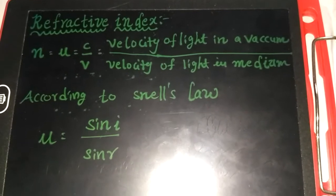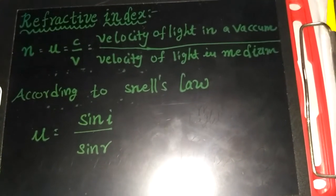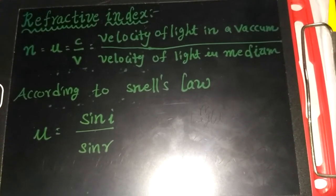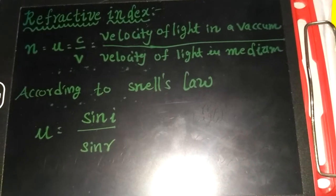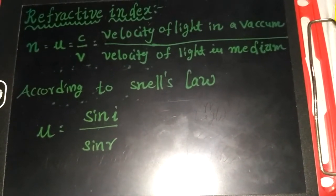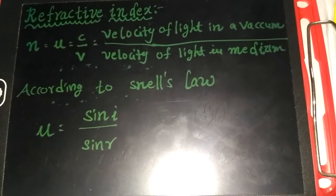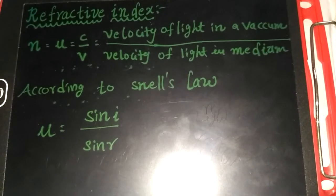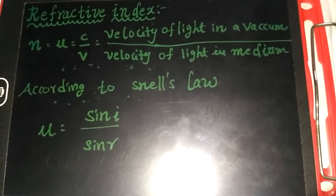If we take rarer medium, the velocity of the light is more when compared to the liquids. When compared to the liquids, the velocity of light is more when compared to the solid-state materials.